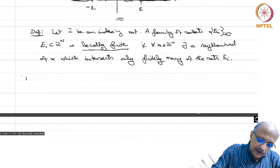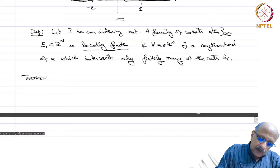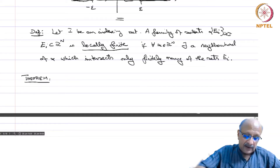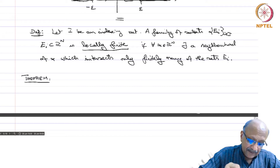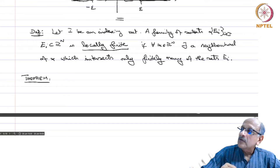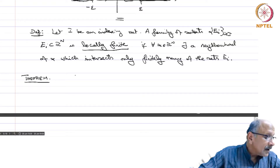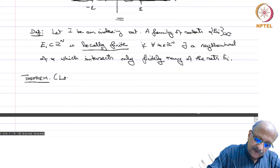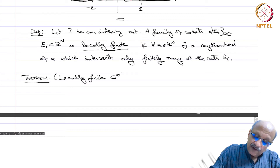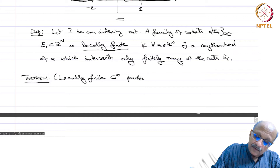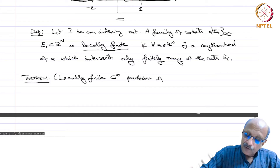We now state a theorem which I will not be proving. The proof can be found in the appendix of the book I cited earlier. It is a standard theorem which follows because of what is called the paracompactness of Euclidean space. This is called the locally finite C-infinity partition of unity.